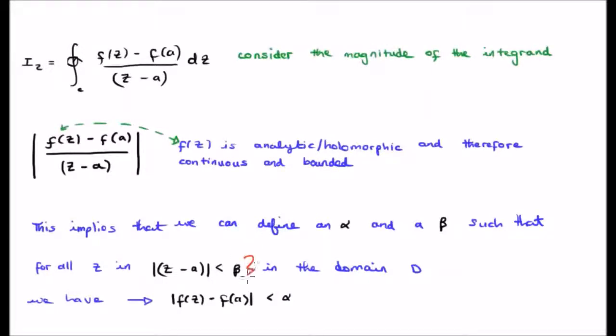Since this is the case, the actual value of f of z minus f of a is also bounded and has a maximum value. It's always going to be less than a particular - it has a maximum value and we can say that it's always going to be less than some other number which we call alpha.